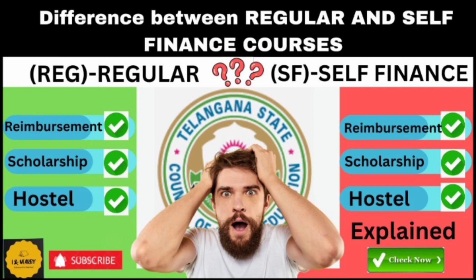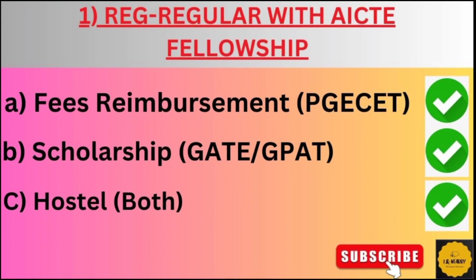The first category is Regular, that is REG with AICT Fellowship. Under this, we have three sub-categories: TSPGSET students, GPAC students, and GATE students. For TSPGSET students, there is fees reimbursement. For GATE and GPAC students, there is a scholarship. Additionally, hostel facilities are also provided — mostly available in government universities. So under Regular, there are three benefits: fees reimbursement, scholarship, and hostel facilities.